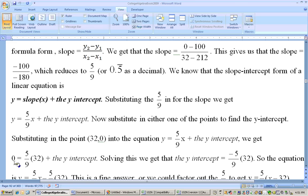so 32 I'm going to substitute in for x, and the 0 I'm going to substitute in for y. So, that would give me 0 equals five ninths times the x, 32, plus the y-intercept. Now, I just need to solve it for the y-intercept.